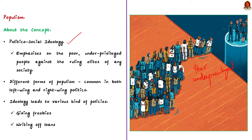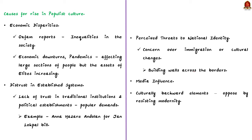Remember, there are many different forms of populism common in both left-wing and right-wing politics. You would have the common assumption that giving freebies or writing off loans is populism, but they are the products of populism. Populism is actually beyond that — it is an ideology which leads to these kinds of policies. Now let us see the causes of a rise in populist culture in society. First, with respect to economic disparities, various Oxfam reports show the inequalities in society.